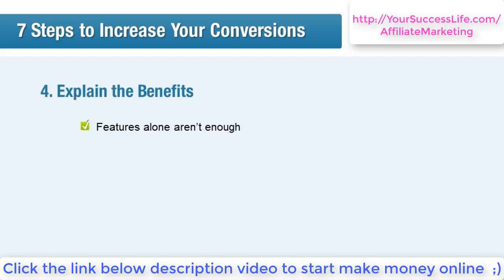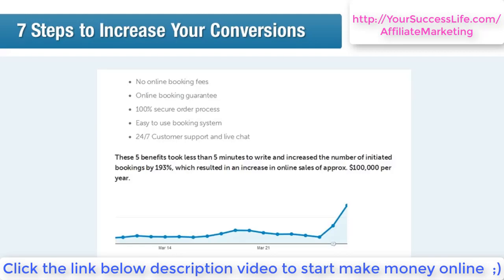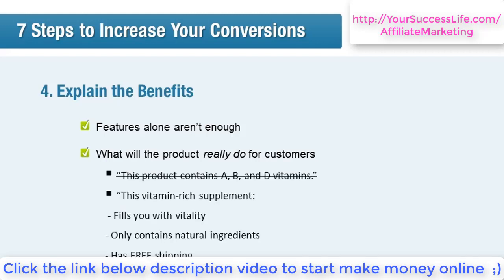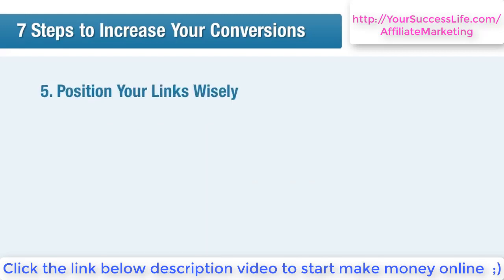Whatever content type you use, it's always important to explain the benefits, not just the features. The Search Engine Journal showed a case where adding five benefits to an online booking page increased successful bookings by 193 percent. Convince people — tell them what they're going to get out of it on a personal level. For example, rather than saying 'this product contains A, B and D vitamins,' say 'this vitamin-rich supplement fills you with vitality, contains only natural ingredients, and has free shipping.' Just be careful not to make false claims — look at the product's sales page for inspiration on benefits you can promote.